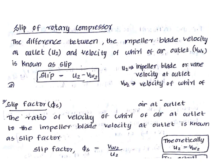The slip is equal to VW2 minus VW2'. The actual equation is VW2 minus VW2'. VW2 is equal to U2, that is U2 minus the actual velocity VW2. U2 minus VW2. The slip factor is the ratio of VW2 to U2. The slip factor ψs is equal to VW2 divided by U2.